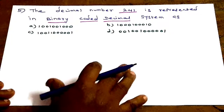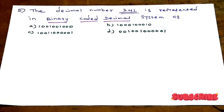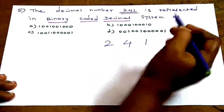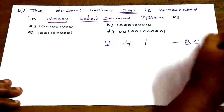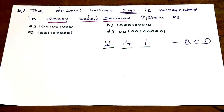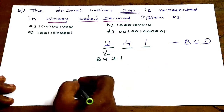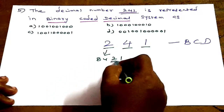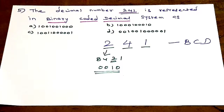Next question — very very important and repeated question: decimal number 241, convert to BCD (Binary Coded Decimal). BCD expands as Binary Coded Decimal. The conversion uses the 8421 method: each decimal digit is individually converted to its 4-bit binary equivalent.